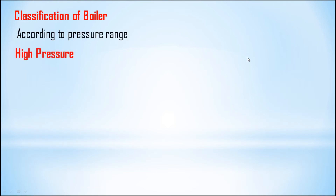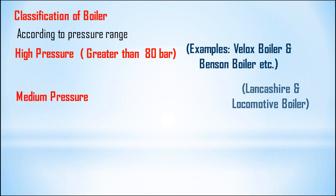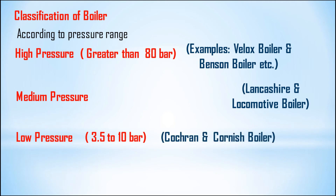The next classification is according to the pressure range. High pressure boilers have a range greater than 80 bar — examples are the Velox boiler and Benson boiler. For medium pressure boilers, examples are the Lancashire boiler and locomotive boiler. For low pressure boilers, examples are the Cochran boiler and Cornish boiler.